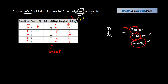This marginal utility is also expressed in terms of rupees. Consider Mr. X, a rational person who goes to the market to buy rice. He knows that rice is normally available at 50 rupees per kg.